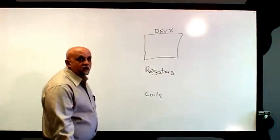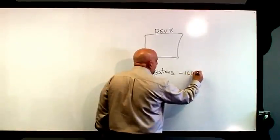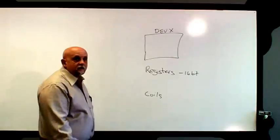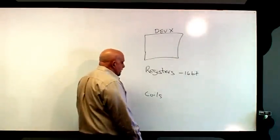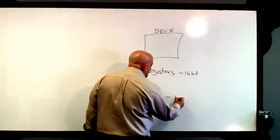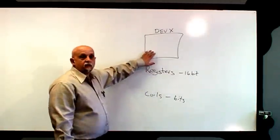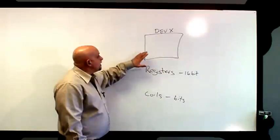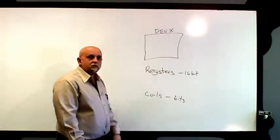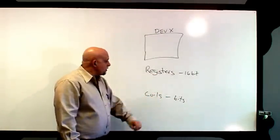So what are registers? Registers are nothing more than 16 bits of unsigned data. Now, 16 bits is the standard word size for most computer systems. Coils are nothing more than single bits. So that device, from the point of view of the Modbus network and the Modbus master, has a bunch of registers and a bunch of coils. The registers are simply 16-bit values; the coils are bits.